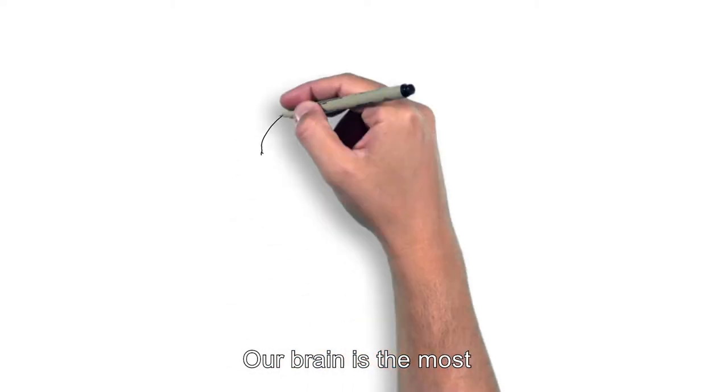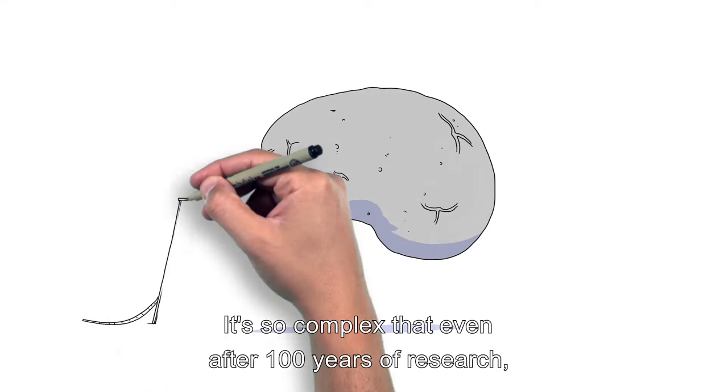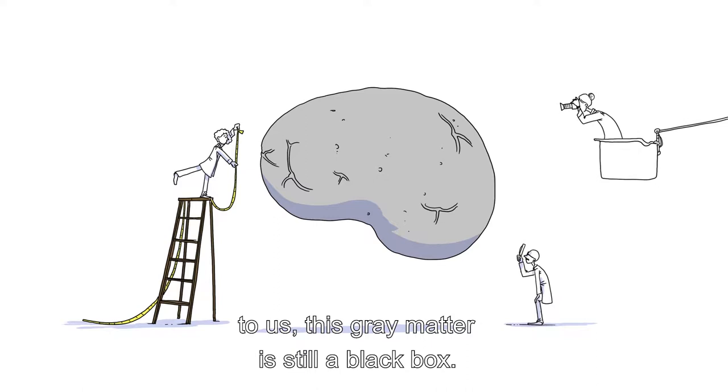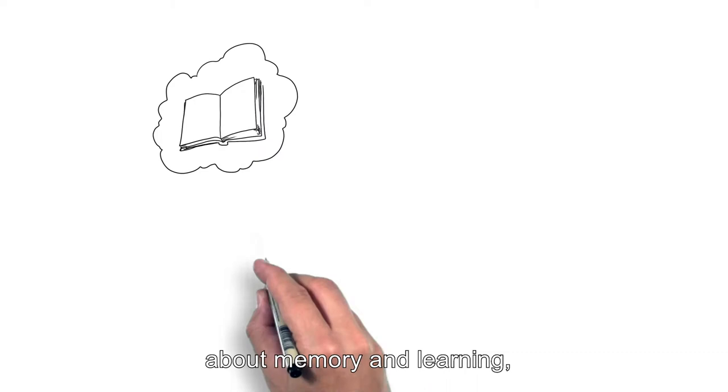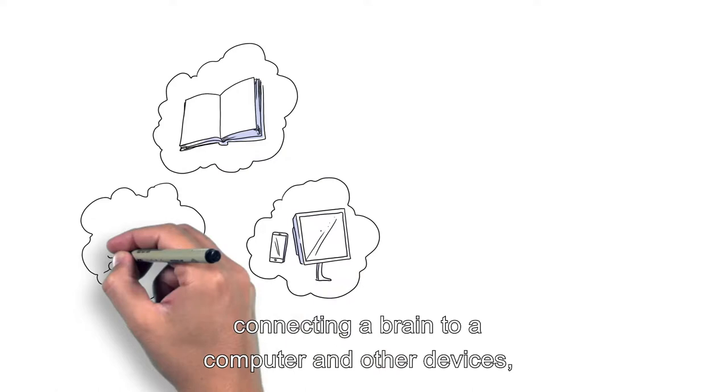Our brain is the most complicated machine in the world. It's so complex that even after 100 years of research, to us, this gray matter is still a black box. We still have so much more to learn about memory and learning, connecting the brain to a computer and other devices, fixing and treating illnesses.